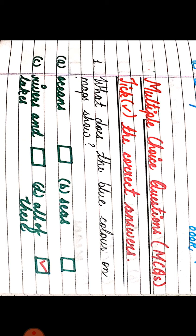Multiple choice questions — tick the correct answer. First one: what does the blue color on the map show? Options are: Option A, oceans; Option B, seas; Option C, rivers and lakes; Option D, all of these. The correct answer is all of these.